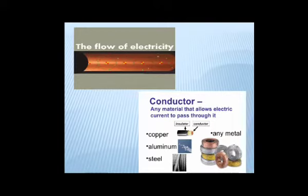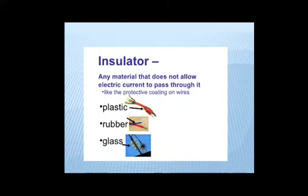The opposite of conductor is insulator. An insulator is a material that does not let electrons to move well and does not conduct electricity. Plastic, rubber, glass, these are insulators.